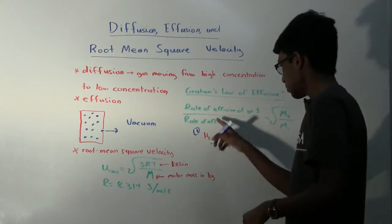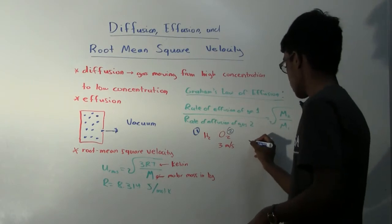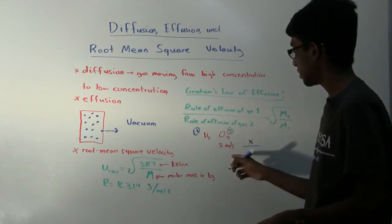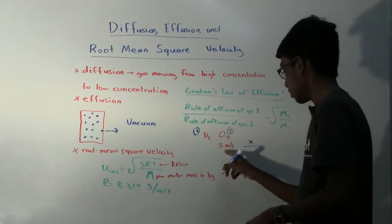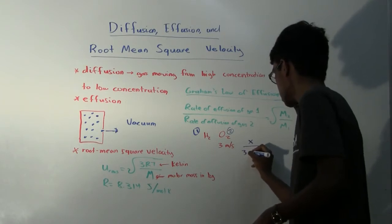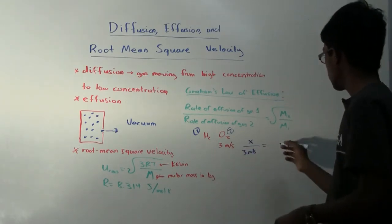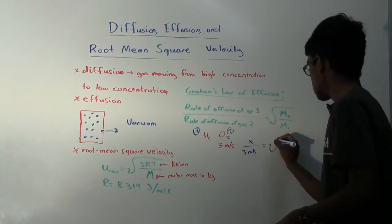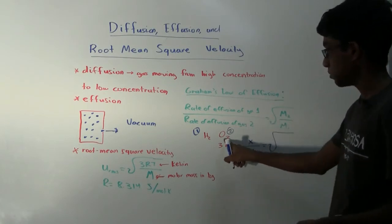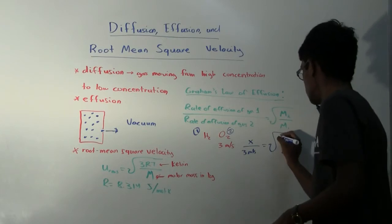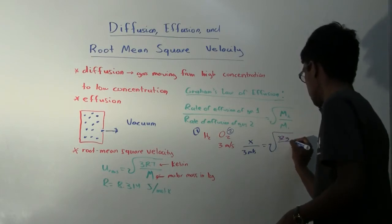So we're looking for the effusion of gas 1, so I'm going to call that x, divided by the rate of effusion of gas 2. We know that, so 3 meters per second. Equals the square root of the molar mass of gas 2. The molar mass of gas 2, that's oxygen, is 32 grams from the periodic table.